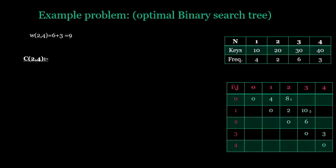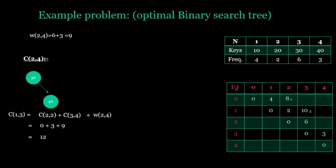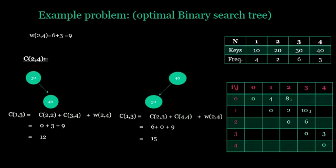Similarly, here the weight of 2,4 is 9. When 3 is the root node, the cost of 2,4 is given by 12. And when 4 is the root node, cost of 2,4 is given by 15. Among these, 12 is the minimum and it is filled in the table.